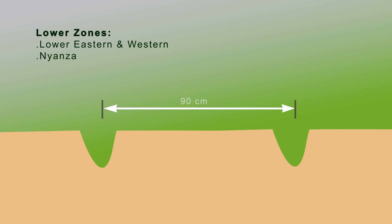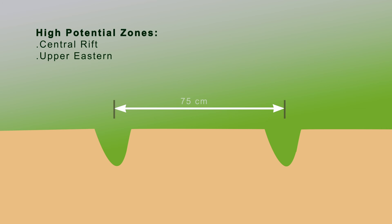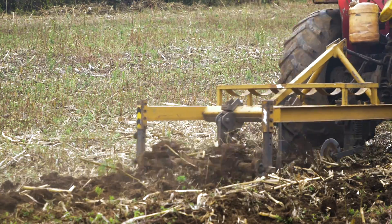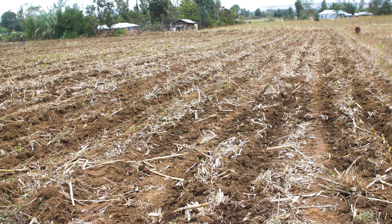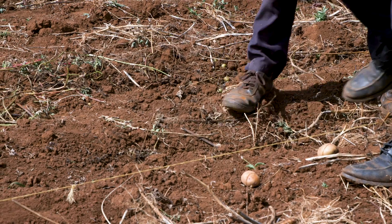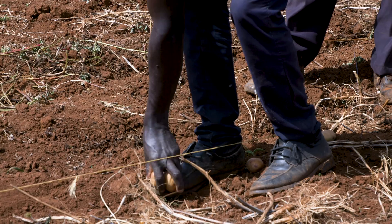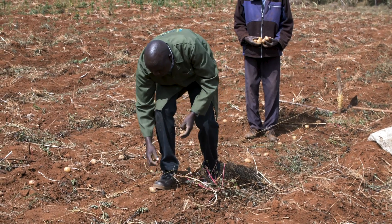While in high potential zones, for example, central rift and upper eastern, a spacing of 75 cm is recommended as stipulated by the Ministry of Agriculture. As the rip lines are permanent and are used year after year to avoid soil disturbance and concentrate nutrients, plant population for rotation crops is achieved by adjusting the number of seeds planted per meter of the rip line.